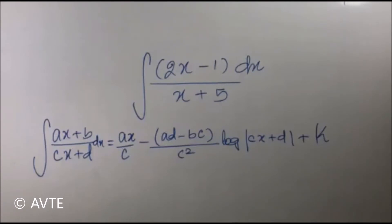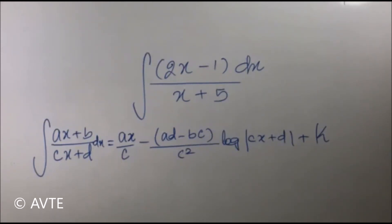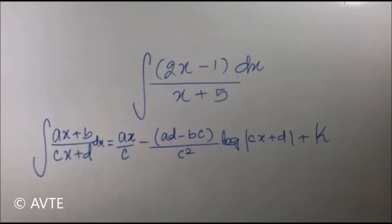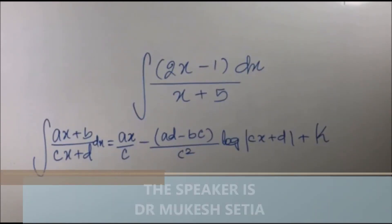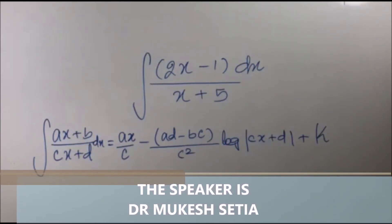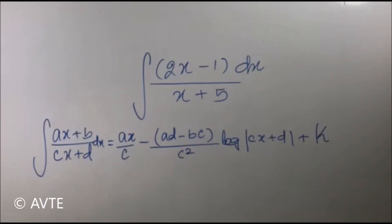But before you use any of the three methods, it is important to know the answer in the exam, as that can increase your motivation level. Just see — we have written the expression and the direct answer. Solve this question and compare: in this question a is 2, b is minus 1, c is 1, and d is 5. So your answer should be 2x minus 11 over 1 log mod (x + 5) plus k.